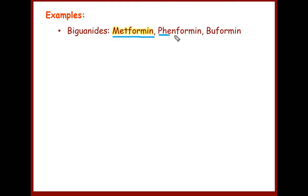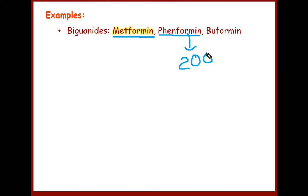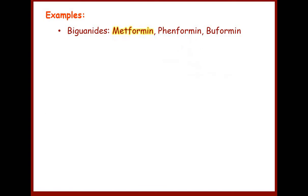Phenformin was introduced somewhere in the 1950s, but because of its toxicity — specifically lactic acidosis, which we will discuss later — phenformin was banned in most major countries in 1977. Interestingly, it took almost 25 years for Indian regulators to ban this drug; phenformin was banned in India somewhere in 2003, but fortunately it is now banned.